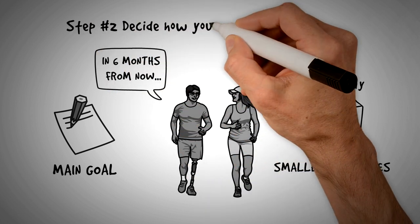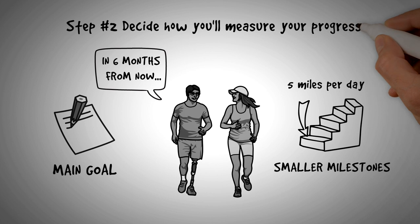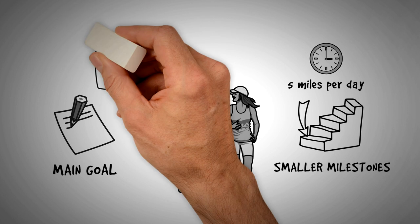Step number two is to decide how you measure your progress. If you want to run faster, for instance, time will be your measuring tool. You cannot get better at something unless you first measure it.